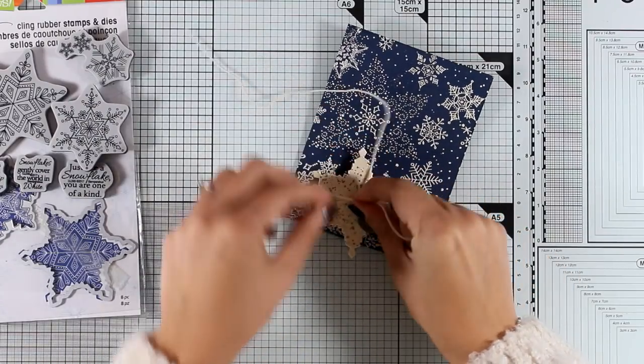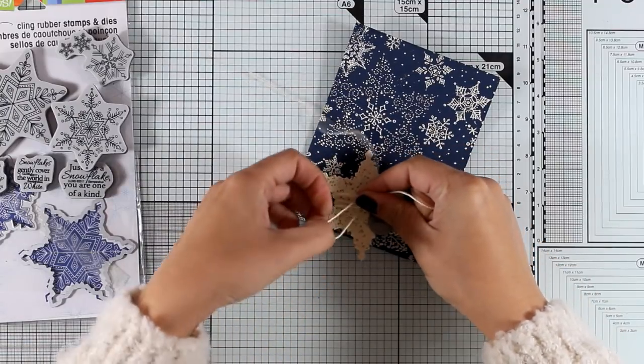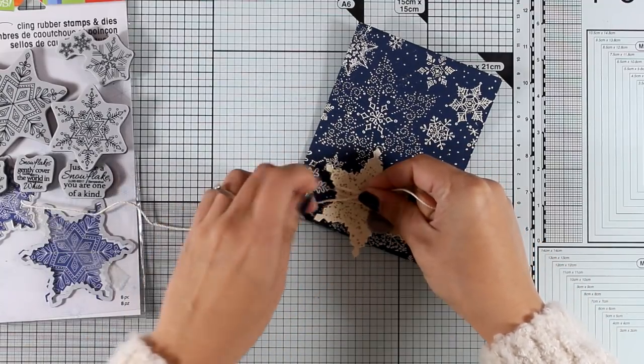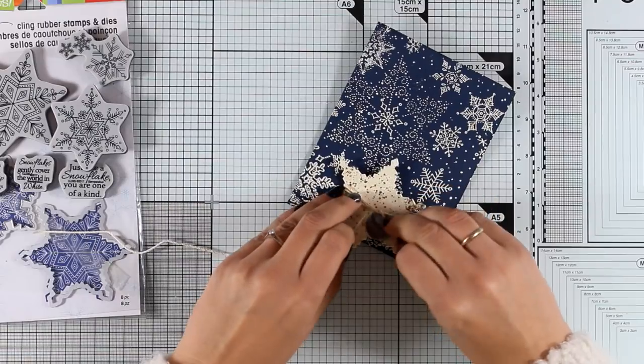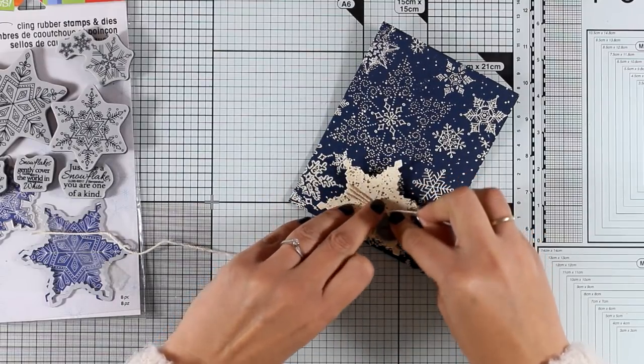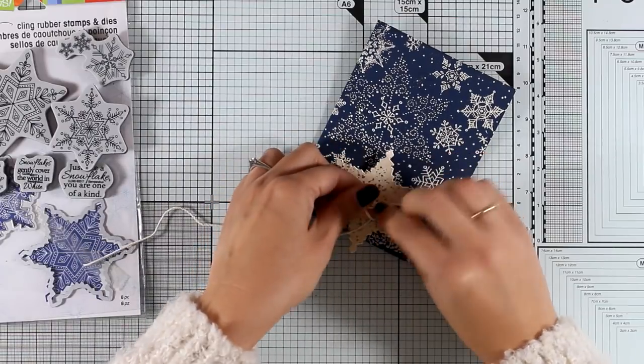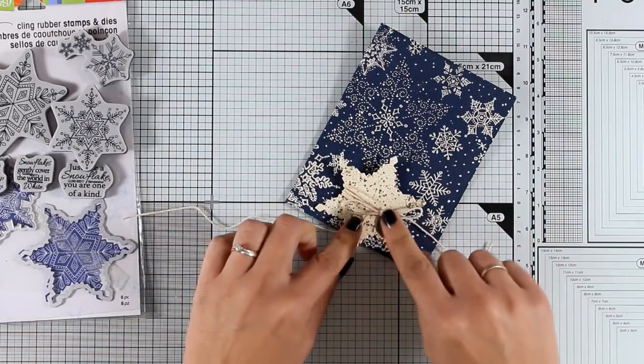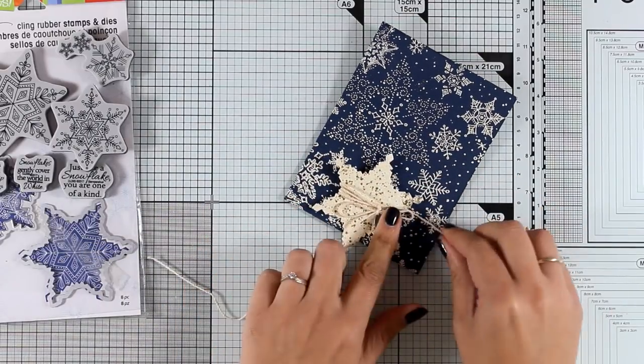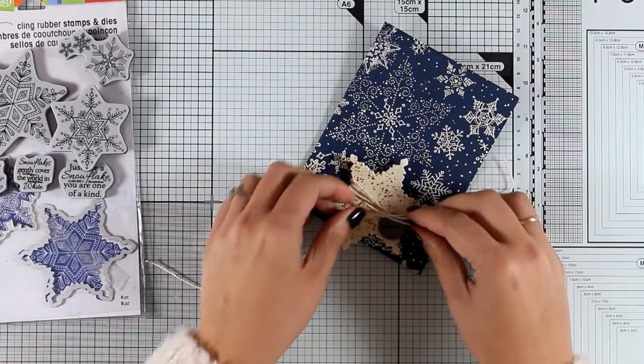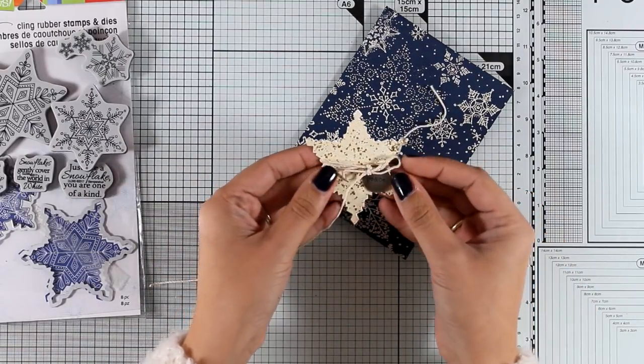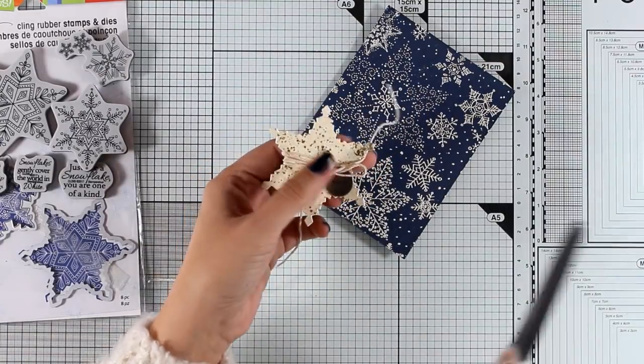Now this can work as a snowflake or as a star. Now if you take a look at the stamp set that you can see on screen right now, there is a matching stamp that you can stamp on the inside of this cutout to give all the detail of the snowflake.